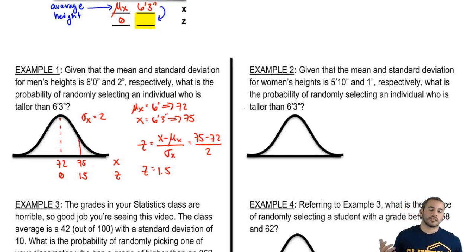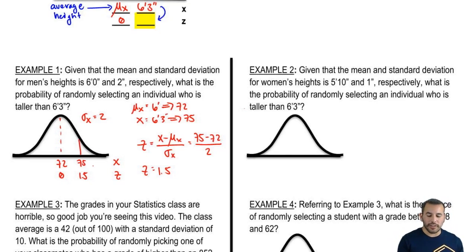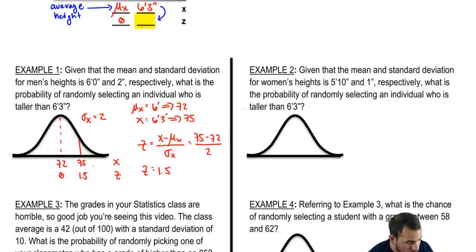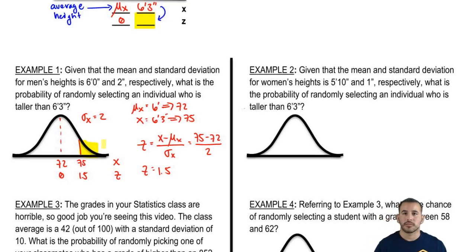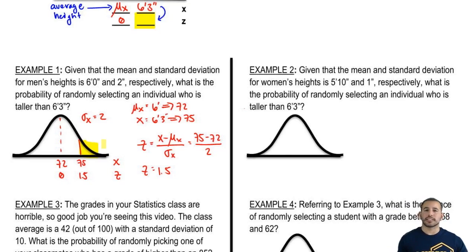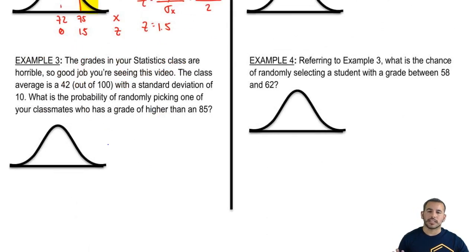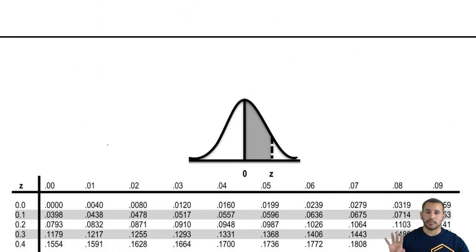We're not done because they're asking for the probability. We got a z-score, but we need to find the probability. So first, let's highlight our interval — we're looking for taller than 6'3", aka taller than 75". So we shade to the right of 75. Our next step is to look it up in the z-table. Our z-score is 1.5, so we look up 1.50 and get 0.4332.